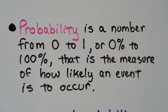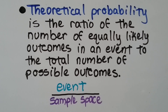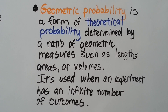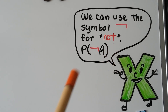Summary: Probability is a number from 0 to 1 (or 0% to 100%) that measures how likely an event is to occur. Theoretical probability is the ratio of equally likely outcomes in an event to the total number of possible outcomes — event over sample space. Geometric probability is a form of theoretical probability determined by a ratio of geometric measures such as lengths, areas, volumes, or angles, used when an experiment has an infinite number of outcomes. You can also use the symbol for NOT to write the probability of an event not occurring.